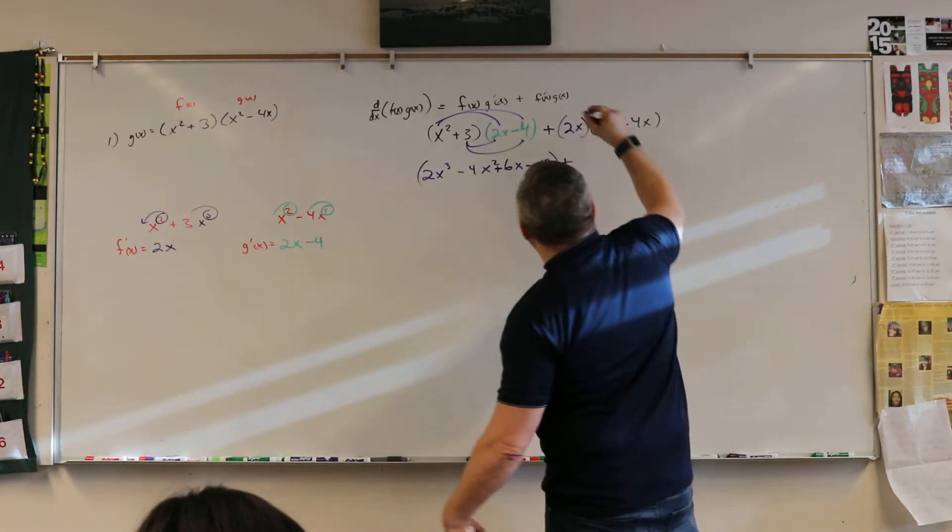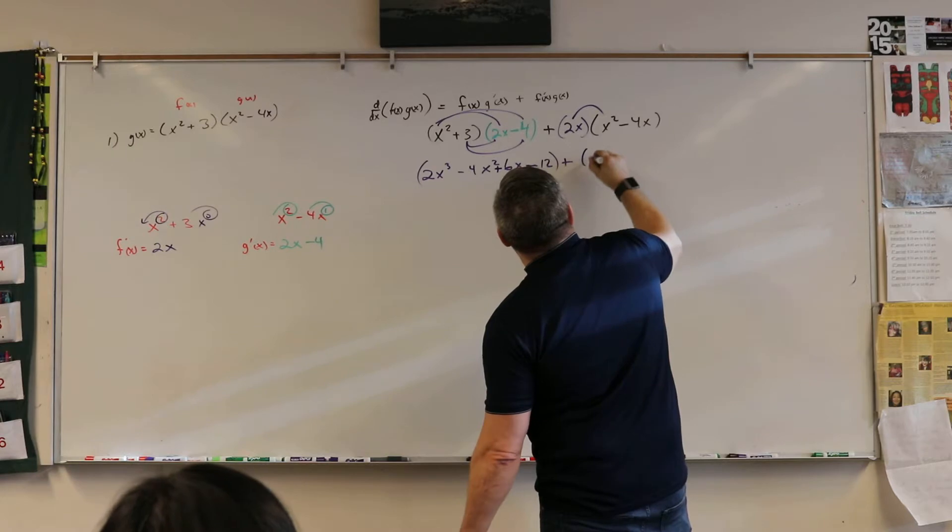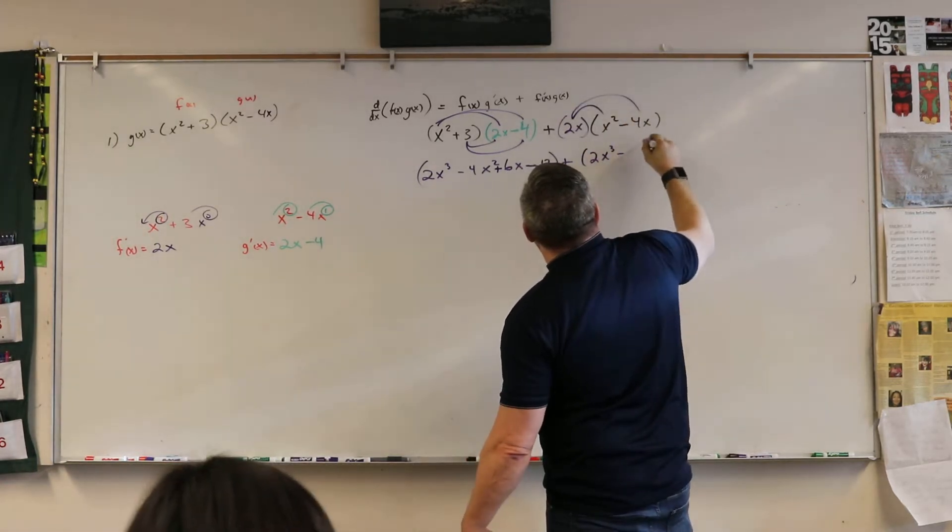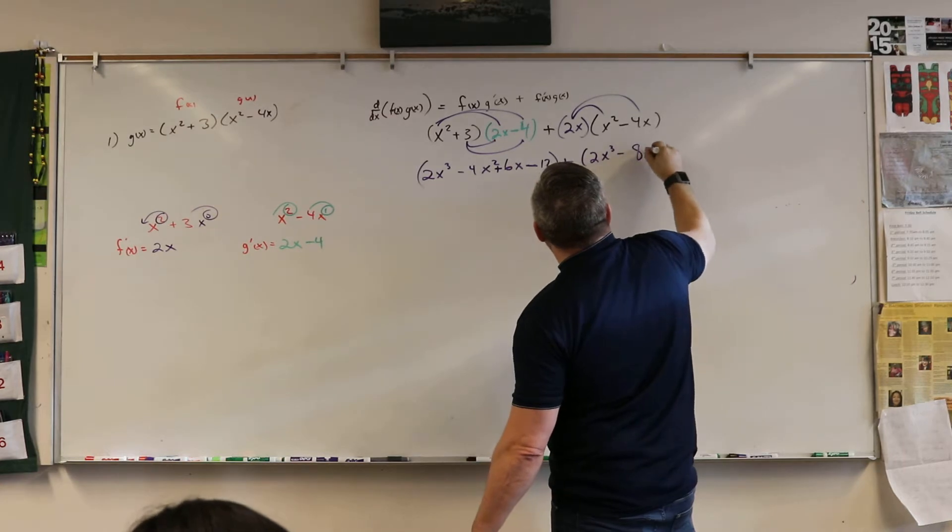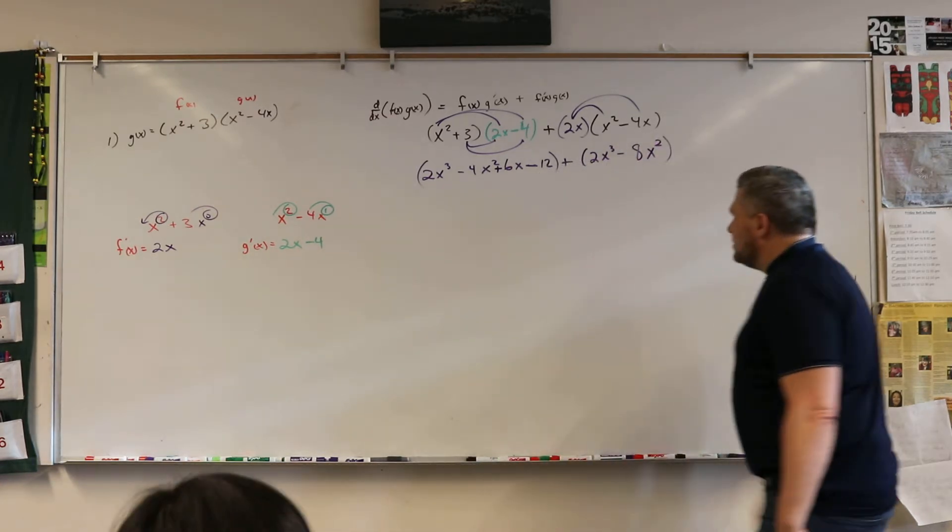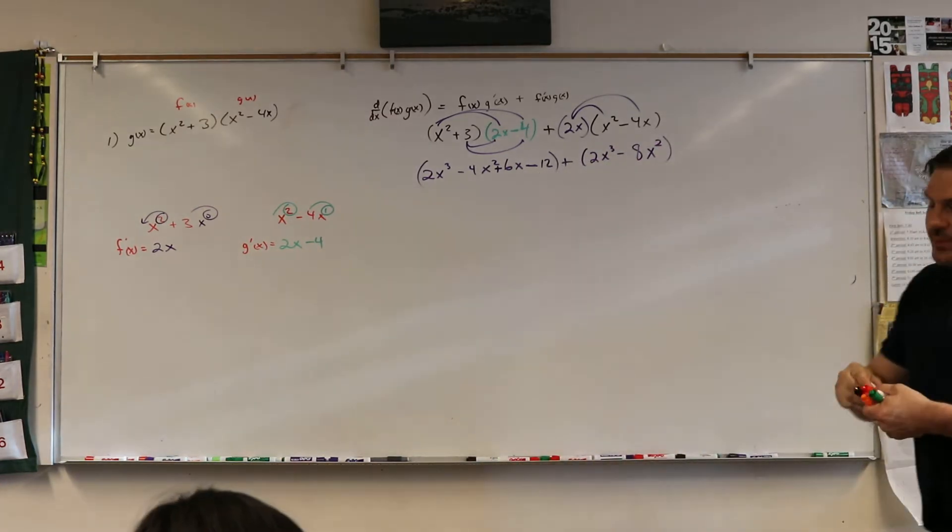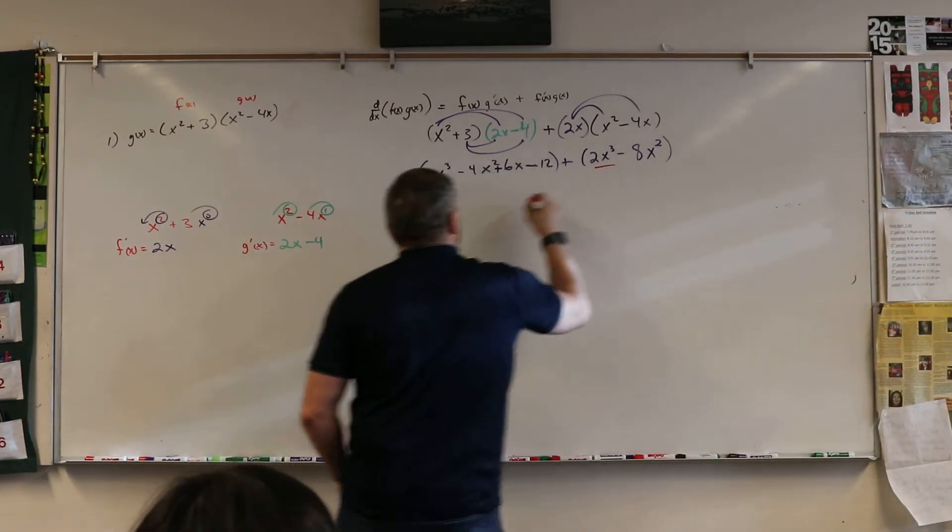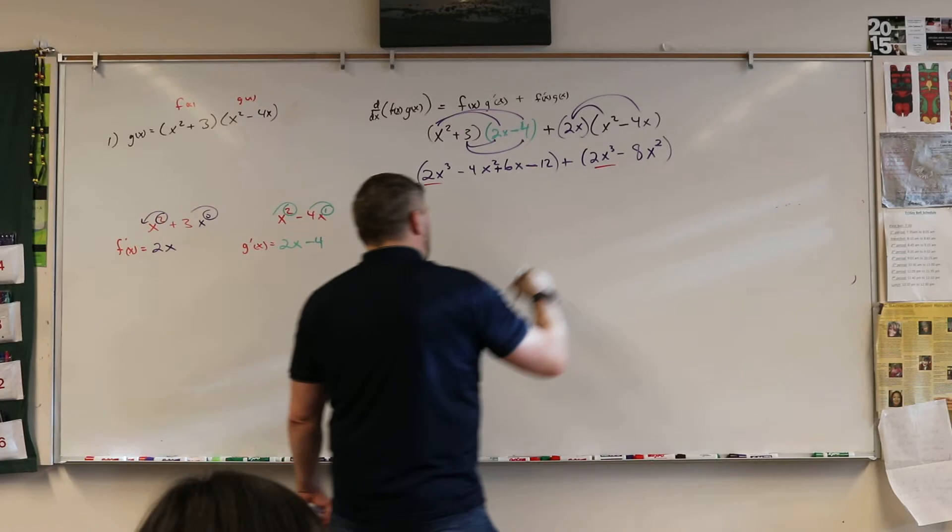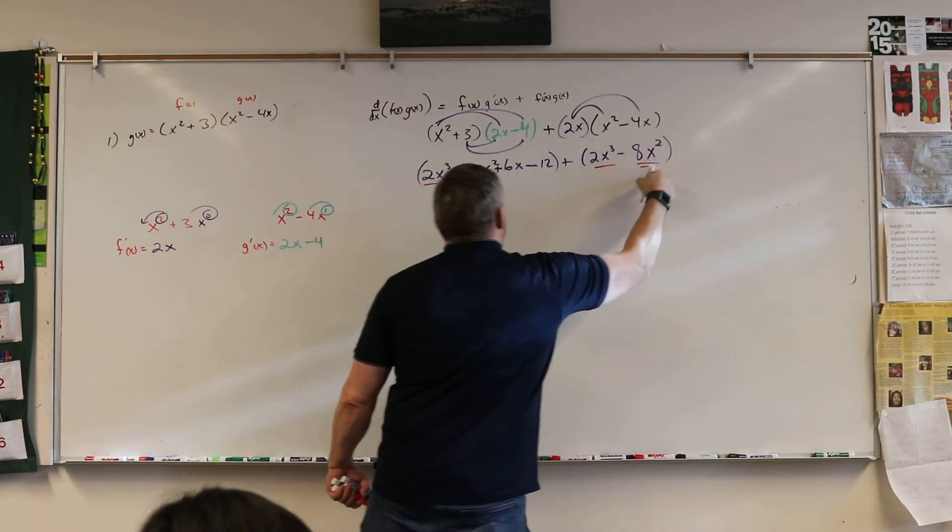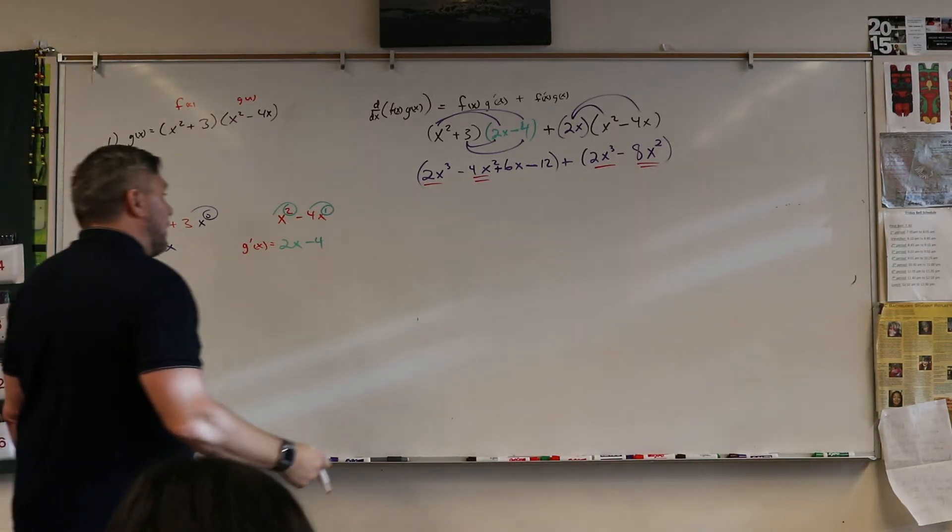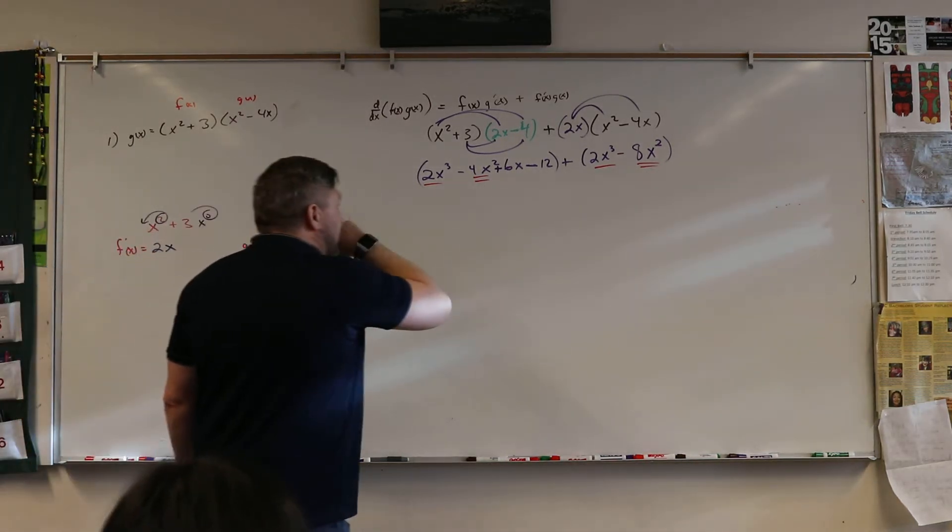All right. So then we got 2x cubed and minus 8x squared. Good. And then we just add the two up. So what I like to do is just underline the ones that are common. And then I'll look for this guy over here and add them up.